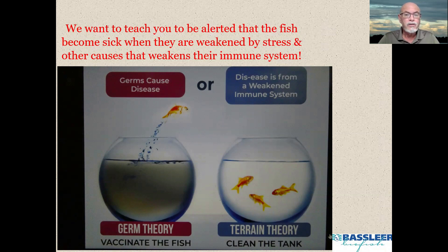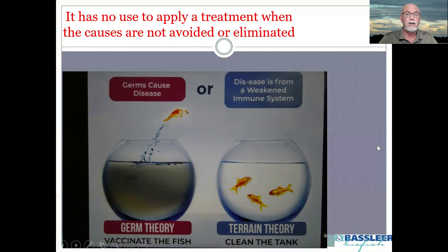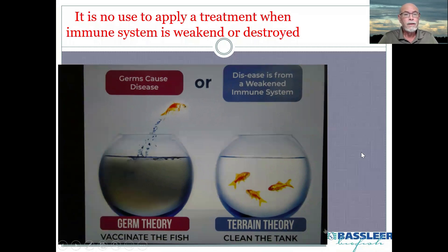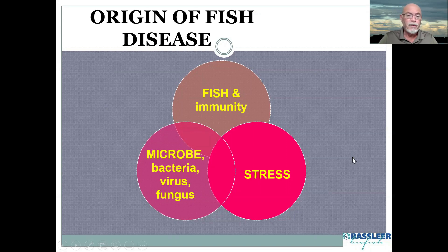If a fish is in a bad bowl, the water is bad, there are a lot of germs, and any treatment you try is no use. It's better to have a good clean tank. Is the germ causing the disease or is it the environment or the immune system? When a fish has a very poor immune system, treatment will have no result. You have to work on the immune system, because the origin of disease is a fish with a weakened immune system appearing in a stressful system.